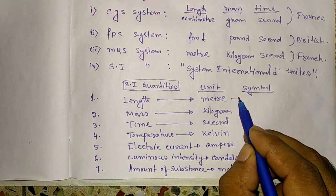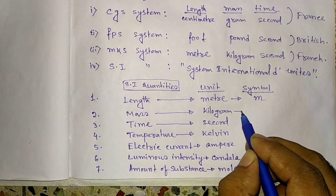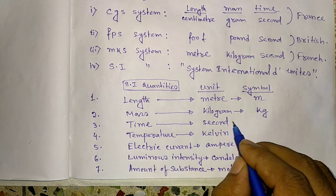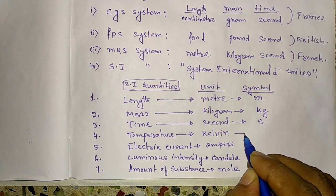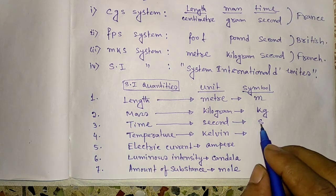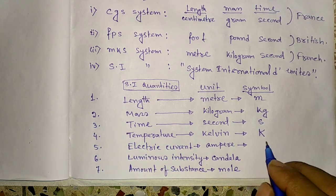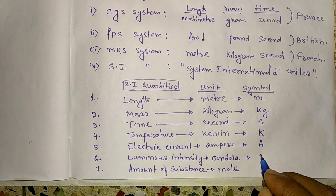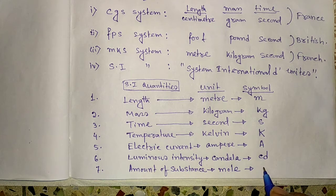Now, symbol. Symbol of length is M. Symbol of mass, kilogram is kg. Symbol of second is S. Symbol of Kelvin is K. Symbol of ampere, capital A. Symbol of candela is small c, small d. Symbol of mole is mol.